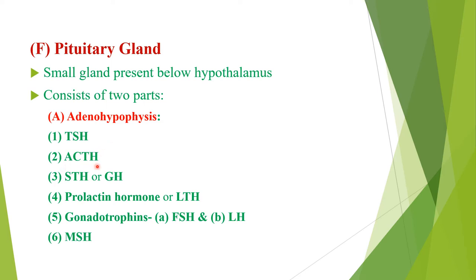Next is ACTH (adrenocorticotrophic hormone), which increases the secretion of corticoids, especially glucocorticoids, from the adrenal cortex. Next is STH or GH (somatotrophic hormone or growth hormone), which stimulates growth of the body by increasing bone growth, increasing lipolysis in adipose tissue, and increasing amino acid uptake and protein synthesis. Next is the lactogenic hormone, also called prolactin or LTH (luteotrophic hormone).